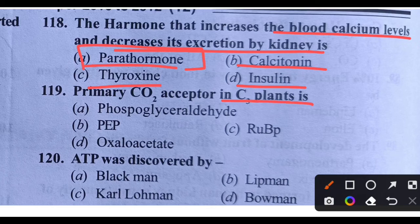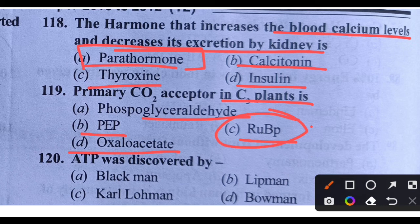Question 119: Primary CO2 acceptor in C3 plants — which compound is it? Options: phosphoglyceraldehyde, PEP, RUBP, or oxaloacetate. The right answer is Option C, that is RUBP. RUBP full form is ribulose biphosphate. PEP is phosphoenol pyruvate.